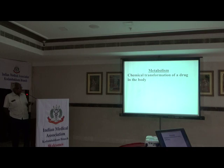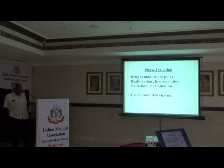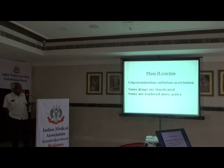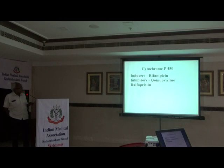Metabolism is the chemical transformation of a drug in the body. Phase 1 reactions make the drug more polar — dealkylation, hydroxylation, oxidation, deamination — all done by cytochrome P450 enzymes. Phase 2 reactions include glucuronidation, sulfation, and acetylation. Some drugs are inactivated with phase 2 reactions, whereas some drugs are made more active — that is why the concept of pro-drug and active drug has arisen.